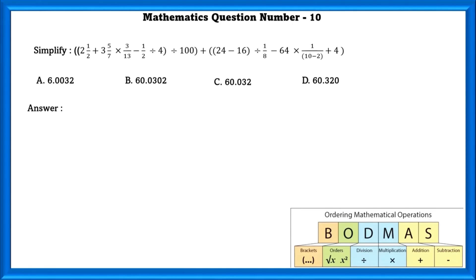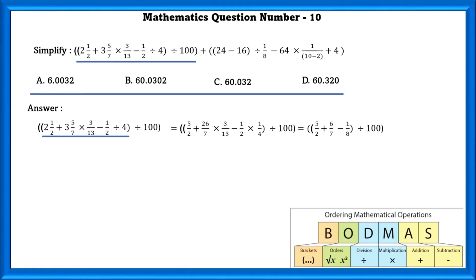Mathematics question number 10. Simplify the given statement. We are going to follow the BODMAS rule — first simplify the brackets. As all options are in decimal form but the statement is in fractional form, we convert to decimal. The first term gives 0.03225.